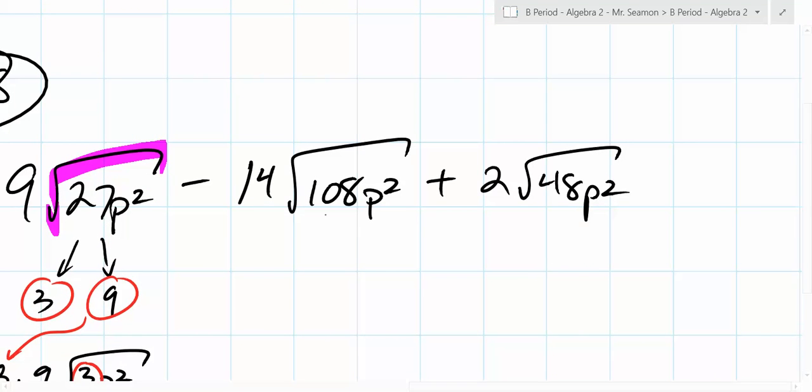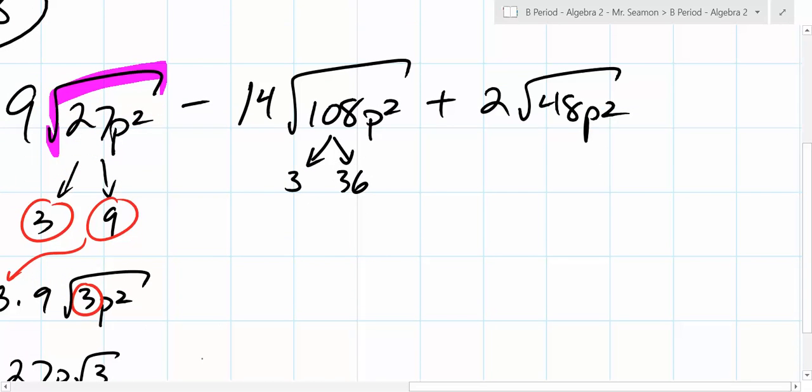And then right here, what should you pull out of 108? It's 3 and what, 36? What's the square root of 36? 6. And the square root of p² is? So you can pull out 6p. What's 6 times 14? It's going to be 60 plus 24, which is? So this turns into minus 84p root 3.